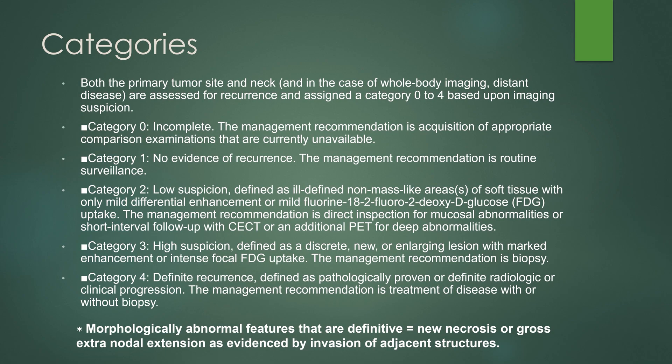The categories of NIRADS include both the primary tumor site and neck, and we are using this to look for recurrence. Each case is assigned a category 0 to 4 based on imaging suspicion. Category 0 is incomplete, meaning additional studies are needed or prior studies are needed for comparison. Category 1 means no evidence of recurrence.